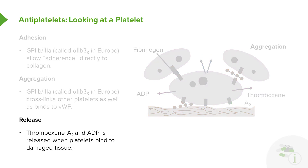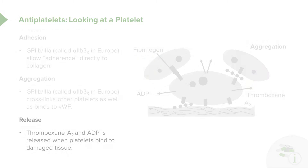The third component of platelet function is its release function. Thromboxane A2 plays a very important role in the release function. ADP is also released when platelets bind to damaged tissue, and is another important component of platelet function.